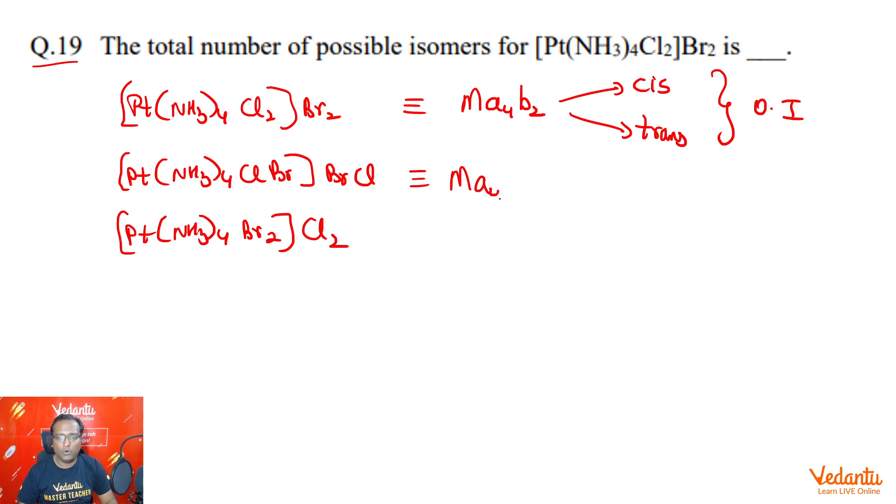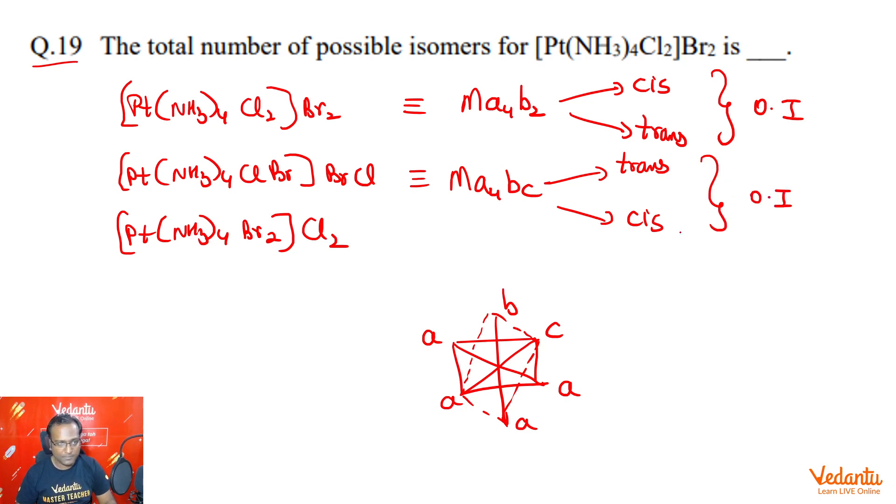The next one is MA4BC. MA4BC, we have one option that is trans, BC trans. And then we go for BC as cis. Let me just draw this one for you in case there is any confusion. So this is B, this is C, this is MA4BC cis form. As you can see, there is still a plane of symmetry present like this, and so this is also optically inactive.